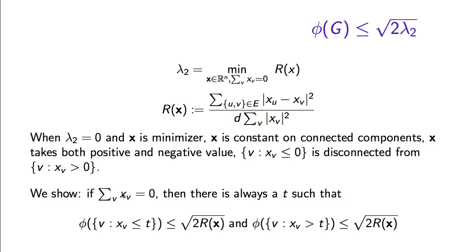For every vector whose entries sum to 0, it is always possible to find some threshold value t such that if we divide vertices into those with corresponding entry smaller than t and those with entry bigger than t, both sets will have expansion smaller than the square root of twice the Rayleigh quotient. One of those two sets must contain at most n/2 vertices, so this proves that the expansion of the graph is at most the square root of 2 times the Rayleigh quotient of x. Applying this to the x that minimizes the expression, we can substitute lambda 2 for R(x), showing the graph has expansion at most the square root of 2 times lambda 2.